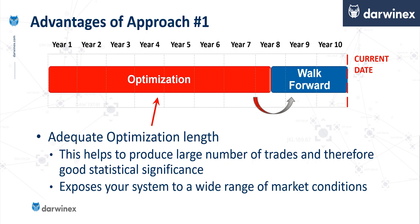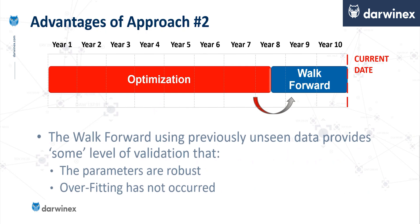Another advantage is that it exposes your system to a wide variety of market conditions. For example, in this example here where we've got a 7.5-year optimization, there would be bull markets, bear markets, times when the price wasn't really going anywhere and was trapped in a trading range, and also a wide variety of volatility. That's really important if we're going to have a system that's able to cope with all of those different circumstances. Also, if we're using a walk-forward validation stage which uses out-of-sample data, this provides us with some level of validation that the parameters are robust and that overfitting has not occurred.